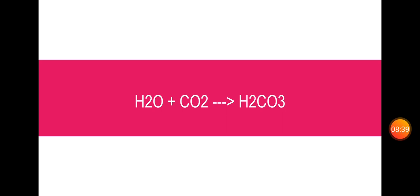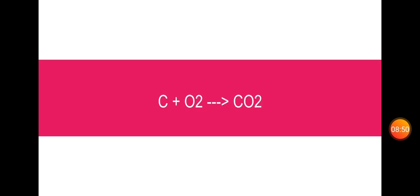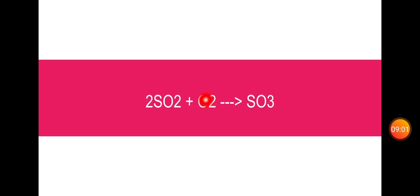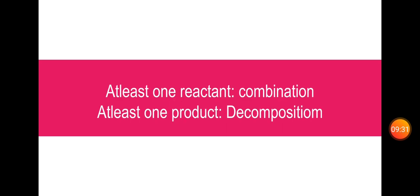The question is: which of these combination reactions are also redox reactions? A combination reaction is a redox reaction if at least one reactant is in elemental state. C plus O2 giving CO2 — both are in elemental state, so it is a redox reaction. 2SO2 plus O2 giving 2SO3 — one reactant is in elemental state, so it is also a redox reaction. H2O plus CO2 giving H2CO3 — no reactant is in elemental state, so it is not a redox reaction.